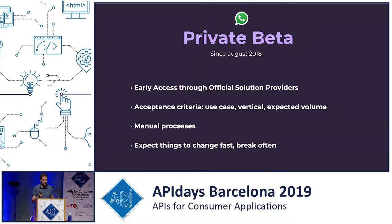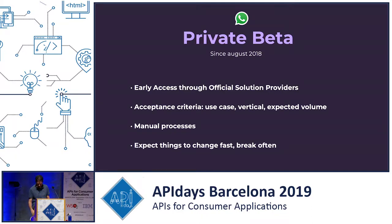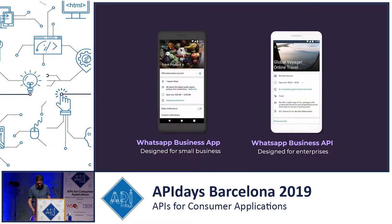We share this information with the WhatsApp team, who review every request one by one, manually, accepting or rejecting every use case. It typically takes two weeks for them to accept a company into the private beta. Everything is very manual still, as you'll see throughout the presentation — many steps and processes are still manual, which is cumbersome, but it's worth it. There are two ways to set up a business presence in WhatsApp, and this usually causes some confusion.